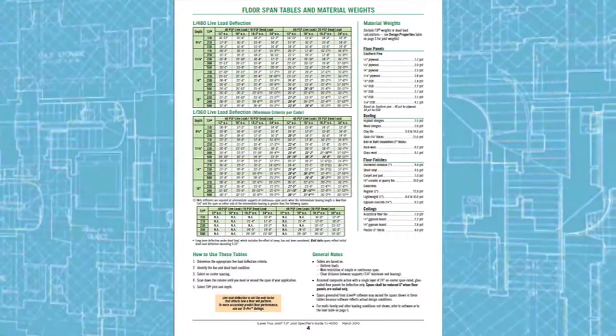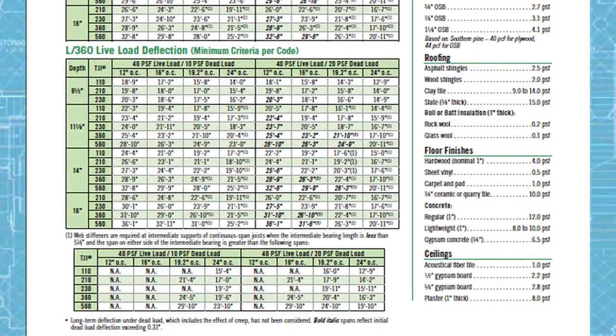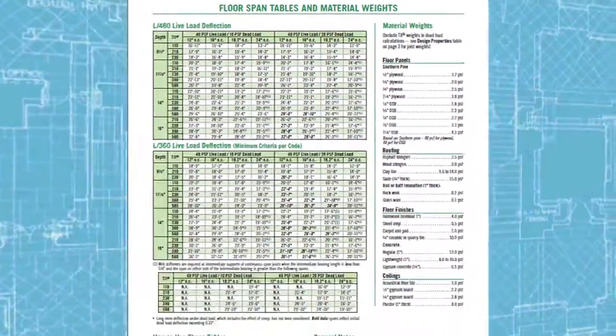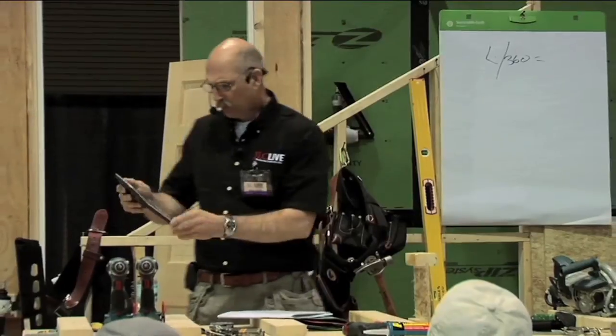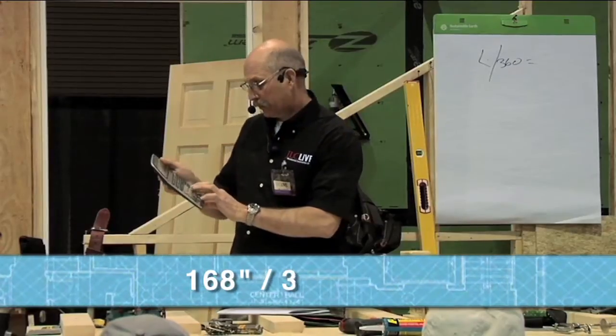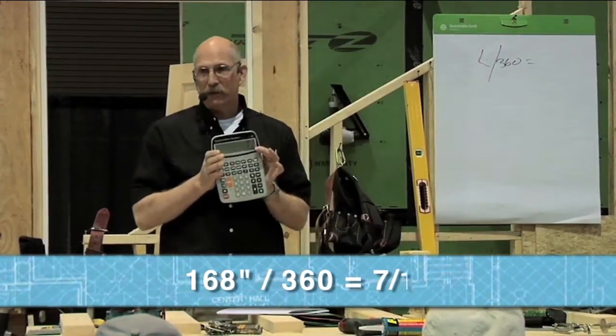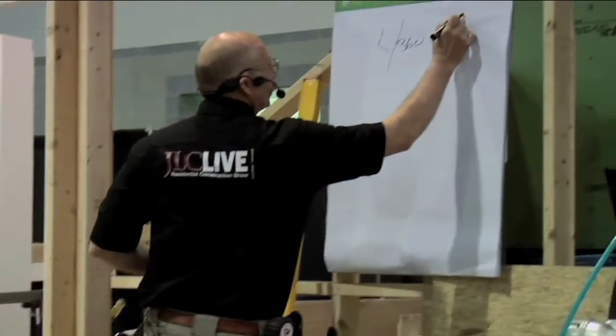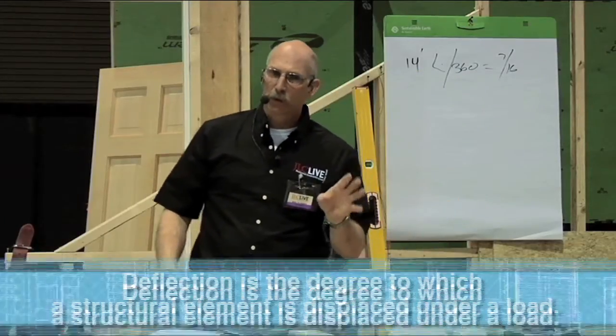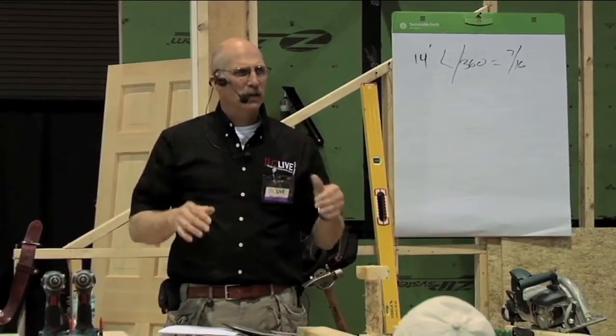There's two span charts listed here: L over 360 and L over 480. If you're not familiar with what L over 360 or L over 480 is, that's the length divided by 360. The length in inches is going to give you a fractional value. So if you take 14 feet and convert that to inches, 168 inches, and you divide that by 360, you get a fractional value of 7/16ths. That means that given a floor load, if this is 14 feet, the maximum deflection for that floor allowable is 7/16ths of an inch.